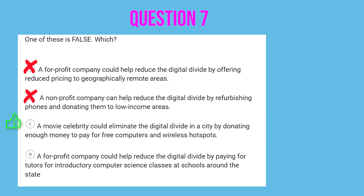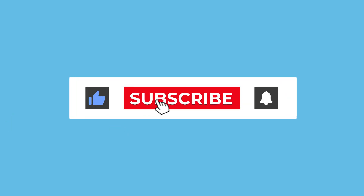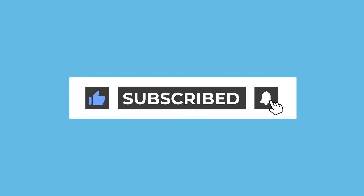Option D: a for-profit company could help reduce the digital divide by paying for tutors for introductory computer science classes at schools around the state — we're reducing the digital divide by giving computing knowledge to those who do not have it. Microsoft actually does this with their TEALS program. That's it for the practice questions — I hope this helped. If this was useful to you, please give the video a like and subscribe to my channel. Thank you very much.